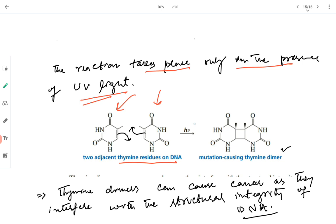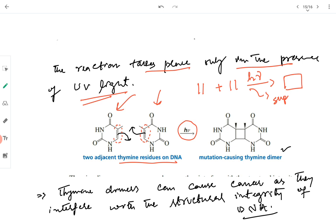Two adjacent thymine residues on DNA each have a double bond. If they are adjacent and there is excess UV light exposure, a 2+2 cycloaddition reaction can occur suprafacially, leading to formation of the thymine dimer. This is similar to the 2+2 cycloaddition reaction, which occurs only under photochemical conditions since thermally induced 2+2 cycloaddition is not allowed. Formation of this thymine dimer causes severe interference in the structural integrity of the DNA of the cells.